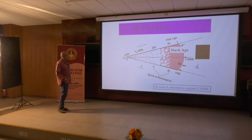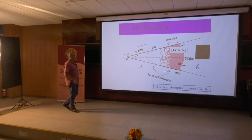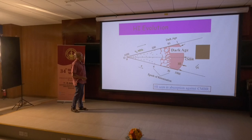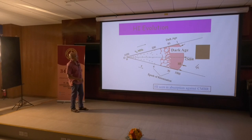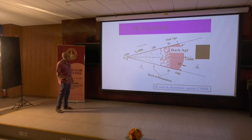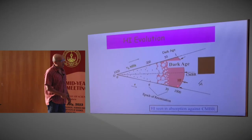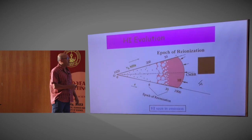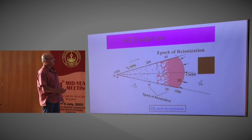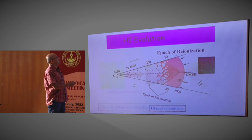Something very interesting happens at a redshift of 30. Until then, the hydrogen distribution is more or less uniform. Once you hit a redshift of 30, you start seeing these ionized bubbles. This is called the epoch of reionization — the neutral hydrogen gets reionized again.